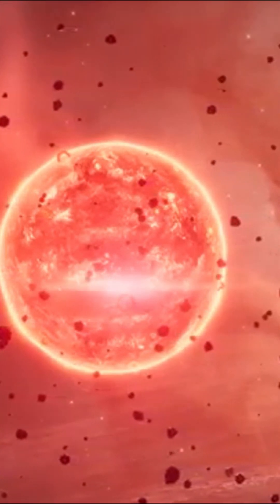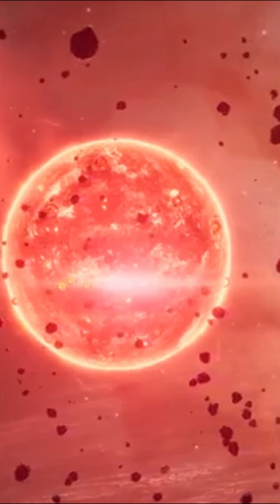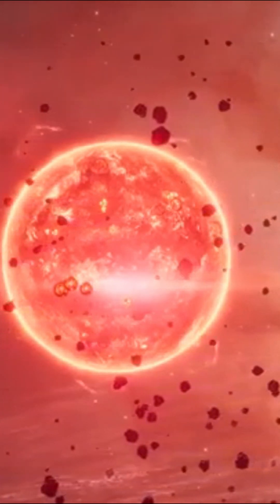Proxima Centauri is the closest star to the sun. It lies 4.2 light years from us. It's part of a triple star system, around which several planets orbit.